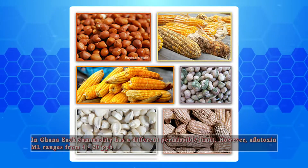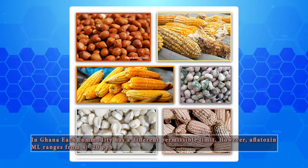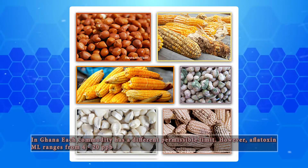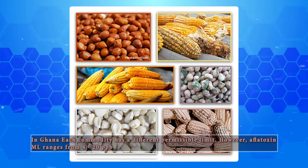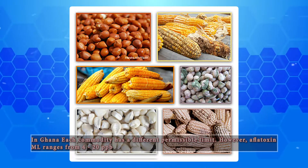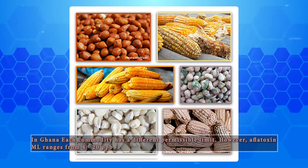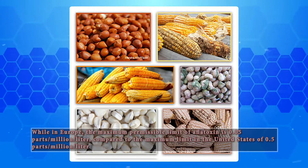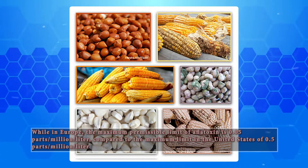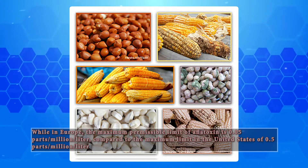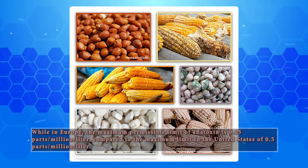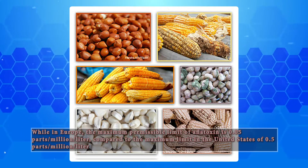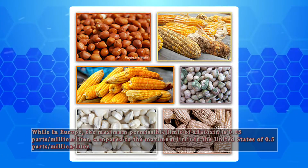In Ghana, each commodity has a different permissible limit. However, aflatoxin levels range from 4 to 20 ppb, while in Europe the maximum permissible limit of aflatoxin is 0.05 ppb, compared to the maximum limit in the United States of 0.5 ppb.